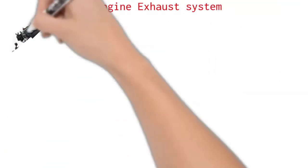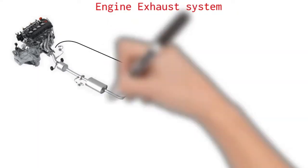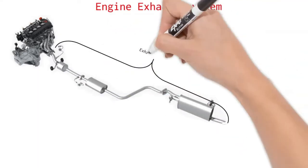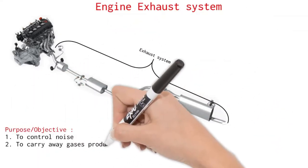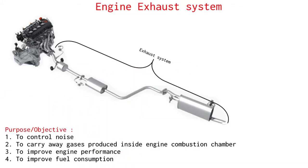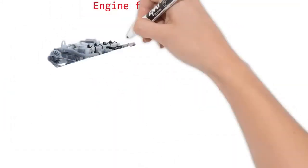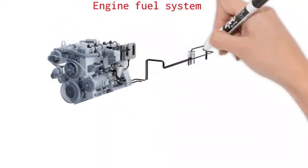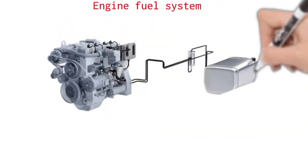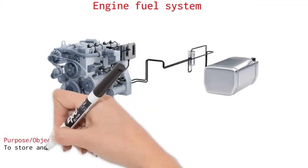Engine exhaust system. Vehicle's exhaust system has four main functions which are to control noise, to carry away gases, to improve engine performance and improve fuel consumption. The function of fuel system is to store and supply fuel to cylinder chamber where it can be mixed with air vaporized and burned to produce energy.